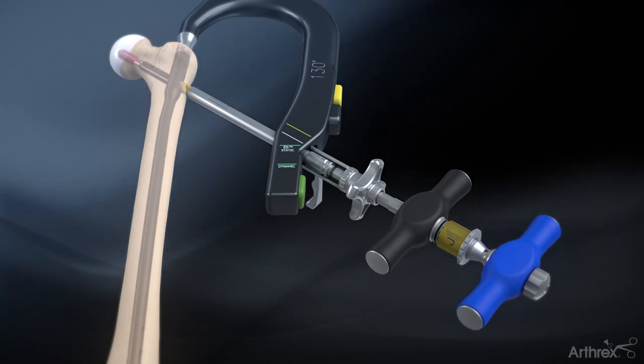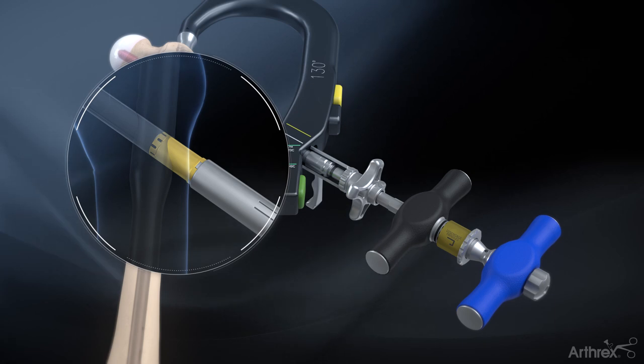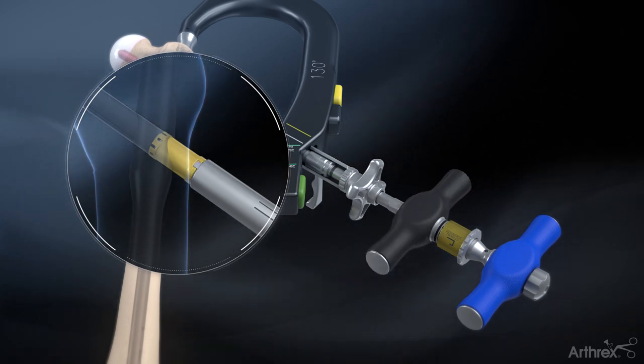To lock the telescoping lag screw, hold the blue handle stationary and turn the black handle clockwise until the torque limiter clicks.